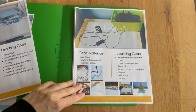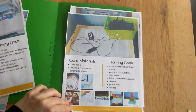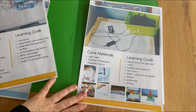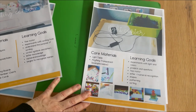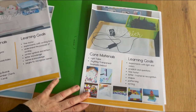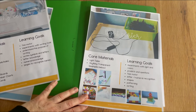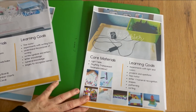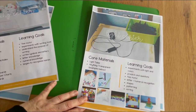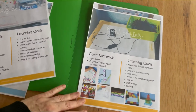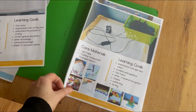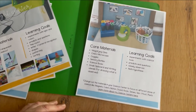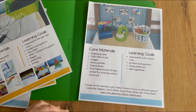The light table is a newer center on the scene and it's a really great tool. Kids are just so drawn to it — it creates another sensorial aspect to learning. You can use transparent materials; there are so many now available, you can even find things at the dollar store. Switch out the materials frequently; there are so many ideas out there for the light table.